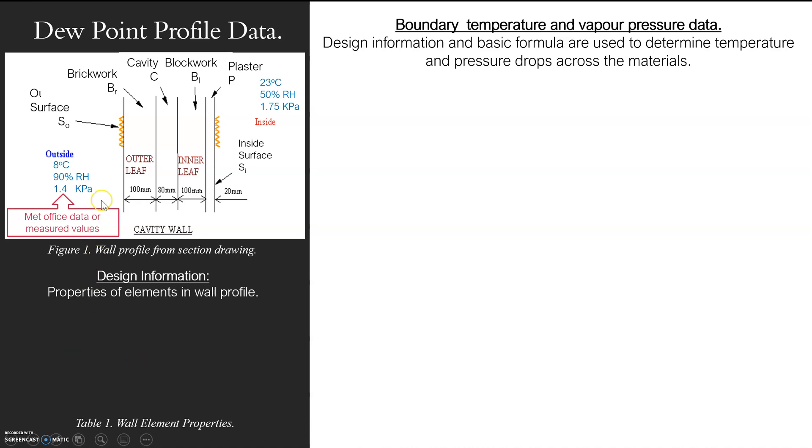So that involves relative humidity and the vapor pressure. You can get this information from Met Office data or you can measure the information. You can actually take value readings inside and outside your building. So I've got outside is 8 degrees, 90 percent relative humidity, 1.4 kPa, which is 1400 Pa Pascal.